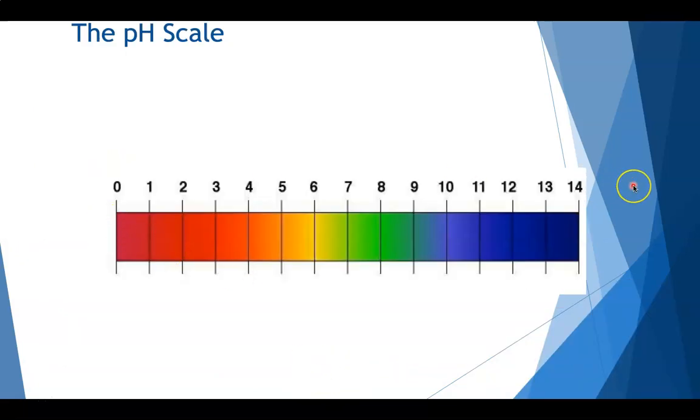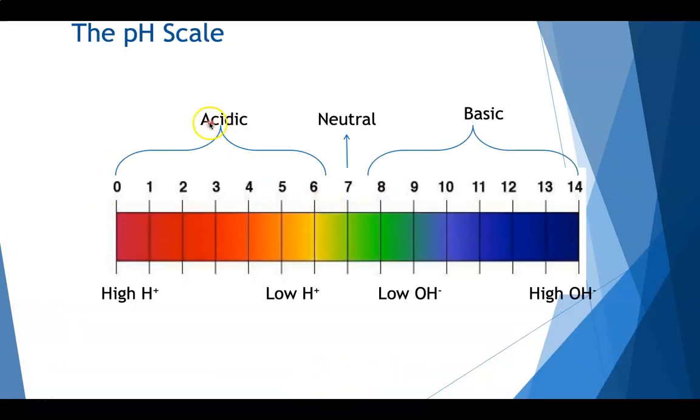Again, our scale is going to show 0 to 14. Our acids are 0 to right under 7 where the lower end has high hydrogens. The closer to neutral, it's low hydrogens. And then you start switching over to talking about the basics, which have high hydroxide groups near the 14 and low hydroxide groups near the 8.